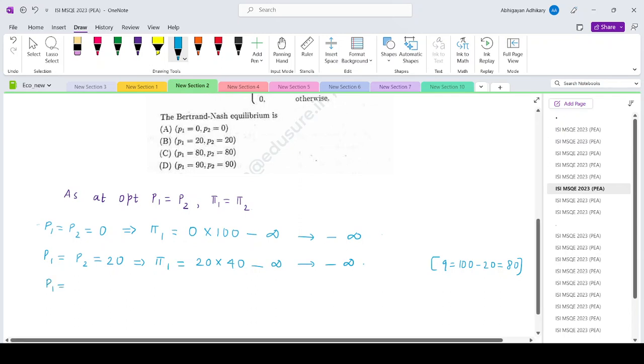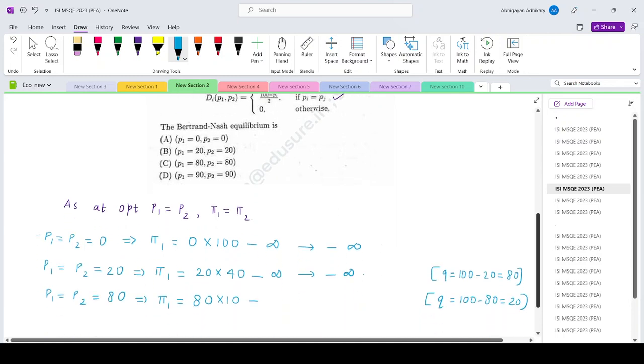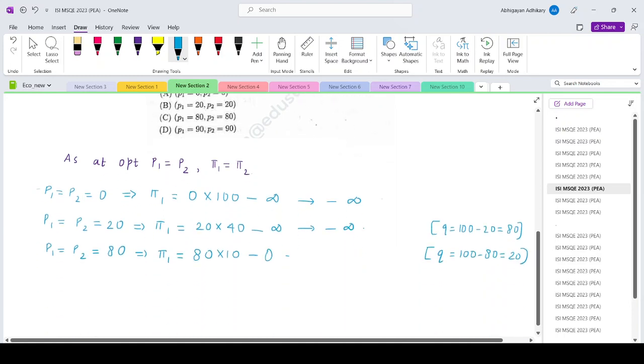The third is P1 equals P2 equals 80. In this case, price is 80. The total market demand would be 100 minus 80, which is 20. It will exactly get 10 units. And if it's producing 10 units, then it will incur a cost of 0. So this is basically giving you 800.